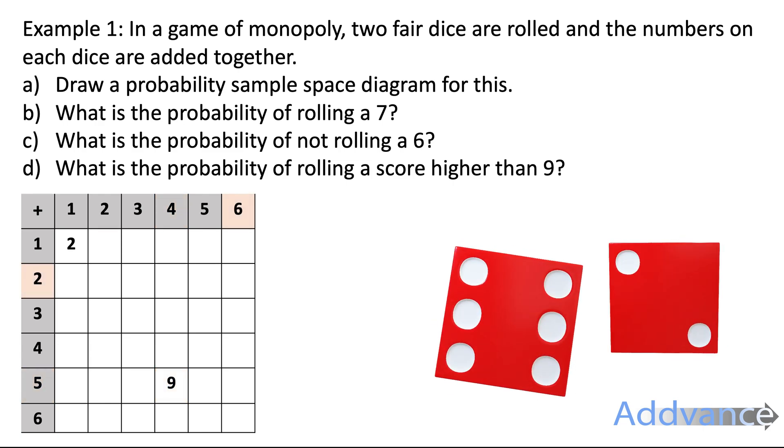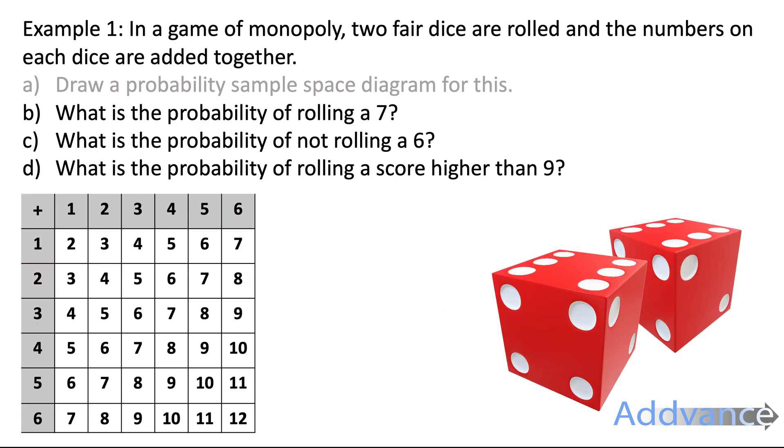Finally, if you get a 2 and a 6, that will be an 8, and you fill in the probability sample space diagram like that, and if you did all of the numbers, you would get this here.